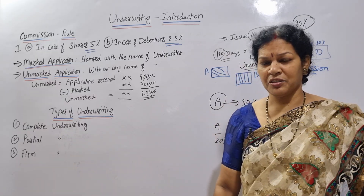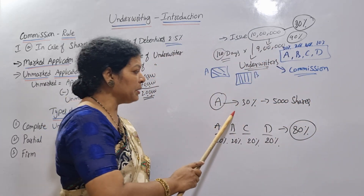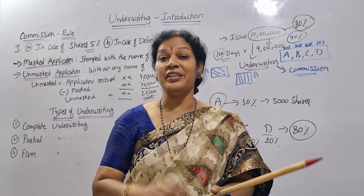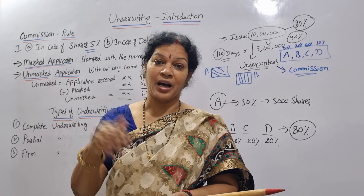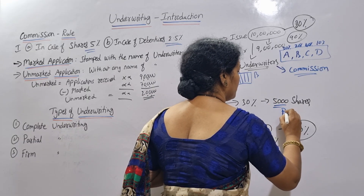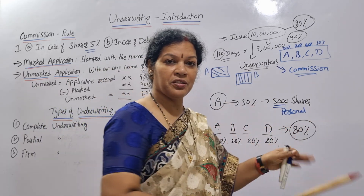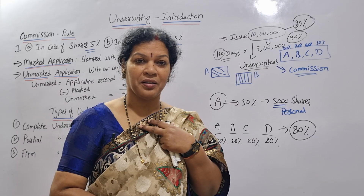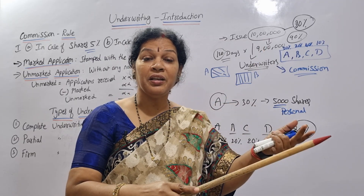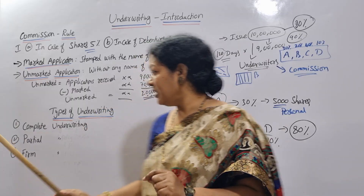The third type is firm underwriting. Suppose an underwriter has a 30% commitment. In firm underwriting, the underwriter also personally applies for shares — for example, 5,000 personal shares. Even within their 30% responsibility, they hold a personal share. For example, if the underwriter's commitment covers 3 lakhs of shares and they personally take 5,000, they will pay for approximately 2,95,000 shares of the remaining obligation. This is firm underwriting.